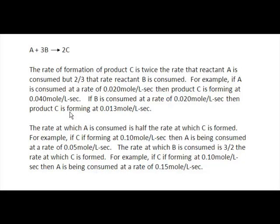You could also look at it another way. The rate at which A is consumed is half the rate at which C is formed. For example, if C is forming at 0.1 moles per liter per second, then A is being consumed at half that rate. The rate at which B is consumed, on the other hand, is three-halves the rate at which C is formed. For example, if C is forming at 0.1 moles per liter per second, then B is being consumed at a rate of 0.15 moles per liter per second. Note: this should be labeled B.